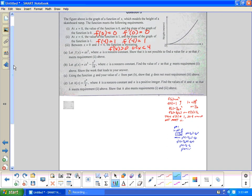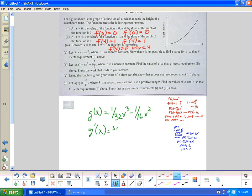Let's go up and take a look here again, part C in green. Using the function g and your value of c from part b, show that g does not meet requirement three. So we got g(x), we agreed it was our function here. g(x) equals (1/32)x³ minus (1/16)x². And we had g'(x) equal (3/32)x² minus (1/8)x. And the last one says the function is always increasing.